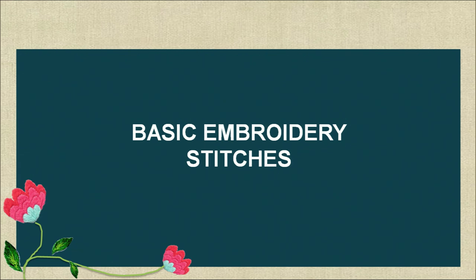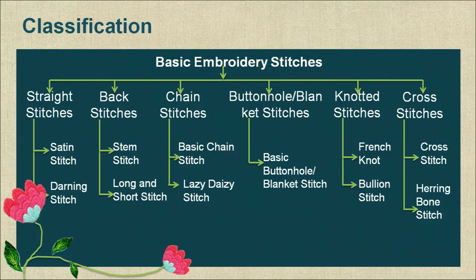Now we are starting with the basic embroidery stitches. Stitches are classified into different families, each with its own basic motion: straight stitches, back stitches, chain stitches, buttonhole or blanket stitches, cross stitch, and knotted stitches. Under straight stitches we have satin and darning stitch; back stitches include stem stitch and long and short stitch; chain stitch includes basic chain stitch and lazy daisy stitch; knotted stitches are French knot and bullion stitch; and cross stitch includes cross stitch and herringbone stitch.